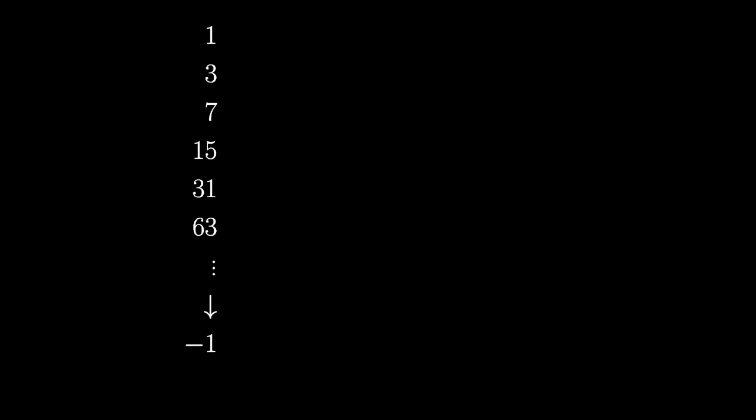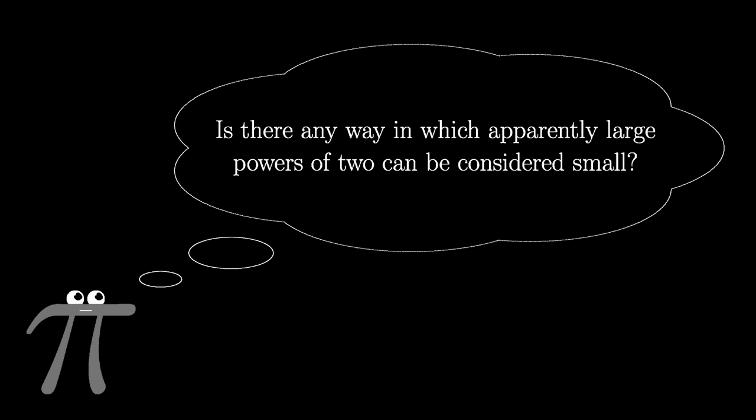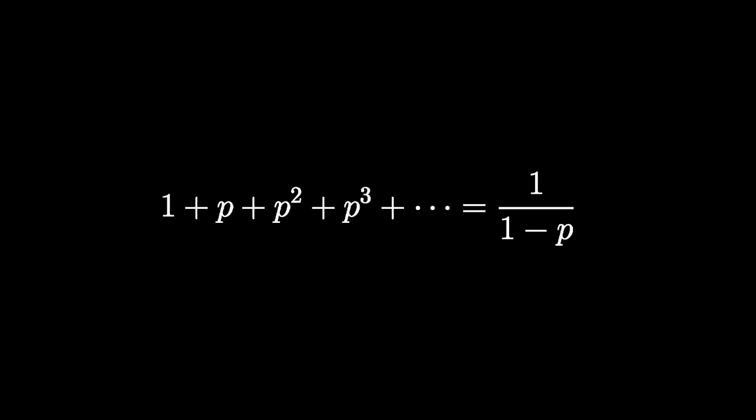You decide to humor the universe and pretend that these numbers, all one less than a power of two, actually do approach negative one. It will prove to be cleaner if we add one to everything and say that the powers of two approach zero. Is there any way that this can make sense? In effect, what you're trying to do is make this formula more general by saying that it applies to all numbers, not just those between zero and one.